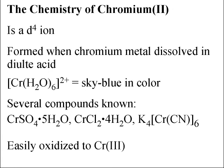The lowest oxidation state for chromium is chromium(II), a d⁴ ion. We take out two electrons: one comes out of the 4s, the other out of the 3d, leaving four d electrons. This is formed when chromium metal is dissolved in dilute acid, forming the hexaaqua ion, which is sky blue in color. Several compounds are known including the sulfate, chloride, and hexacyanochromate. This ion is easily oxidized to chromium(III). The lowest oxidation state is often easily oxidized to a higher one.